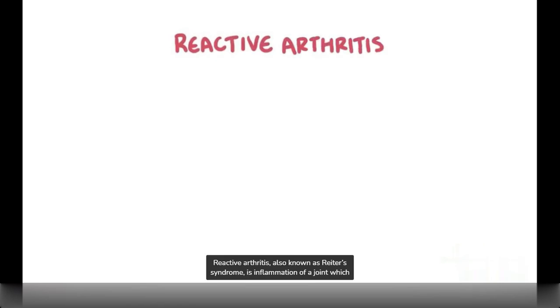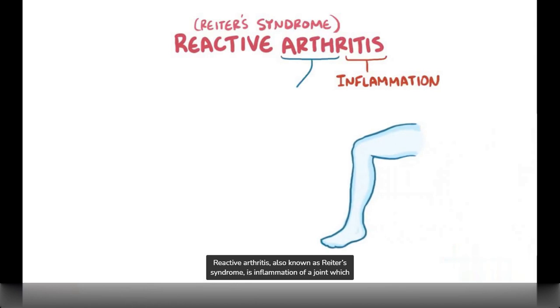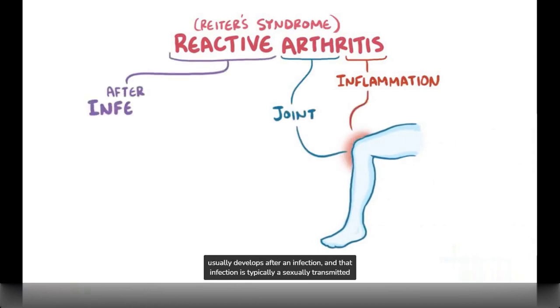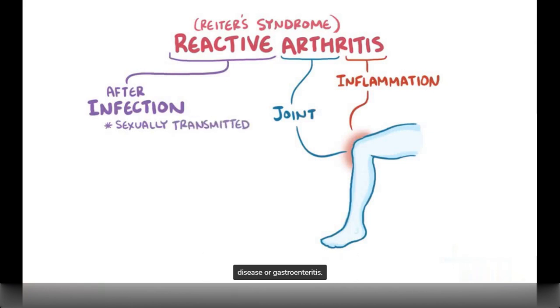Reactive arthritis, also sometimes referred to as Reiter's syndrome, is inflammation of a joint which usually develops after an infection. That infection is typically a sexually transmitted disease or gastroenteritis.